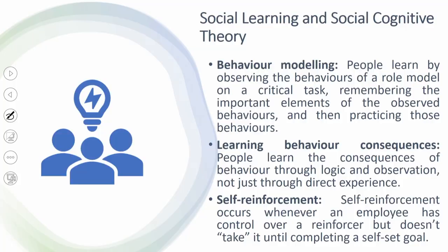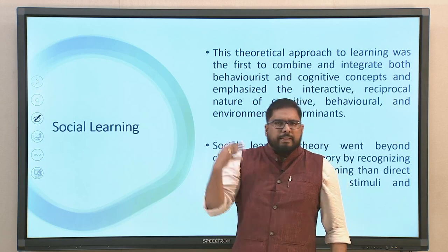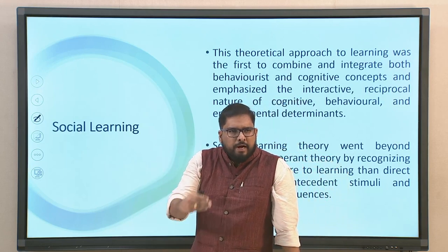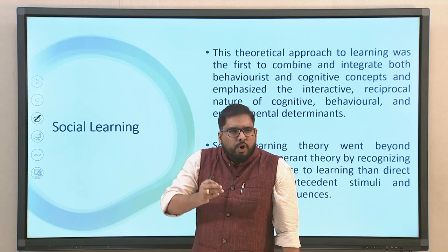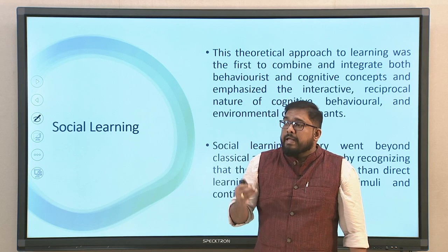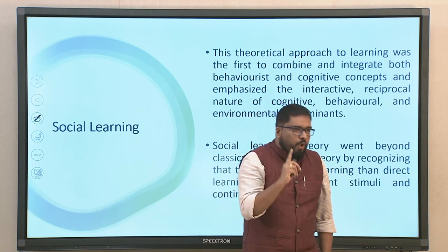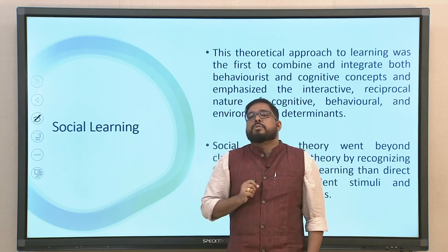Social learning was the first theoretical approach to integrate both behaviourist and cognitive concepts. The behaviourist approach states that external elements trigger behaviour. But when it comes to learning theory, cognitive concepts are also relevant — it emphasizes the interactive, reciprocal nature of cognitive, behavioural, and environmental determinants. It is not correct to say that our behaviour is only guided by external stimuli; we also logically connect observed behaviours with outcomes, and that is social learning.